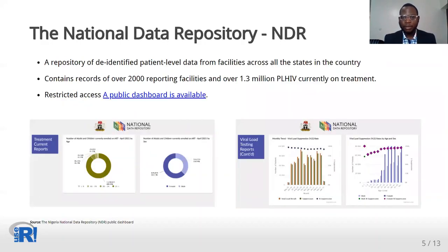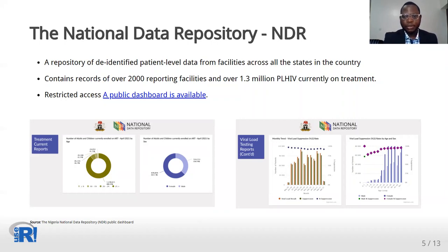In 2016, through PEPFAR support, the journey to the Nigerian National HIV Data Repository started. The repository contains the identified records of over 1.5 million HIV clients on treatment across the country. This is accessible to persons within the country to track progress and improve programming at various levels. A line list of these clients can be downloaded for further analysis and use. The picture below shows a snapshot of the NDR public dashboard.